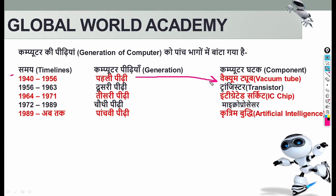The first generation used the vacuum tube. The second generation, from 1956 to 1963, replaced the vacuum tube with the transistor, which reduced the size of computers. In 1964–1971, the third generation replaced the transistor with the IC — integrated circuit. After 1972–1989 came the fourth generation with the microprocessor. From 1989, the fifth generation uses AI — artificial intelligence.